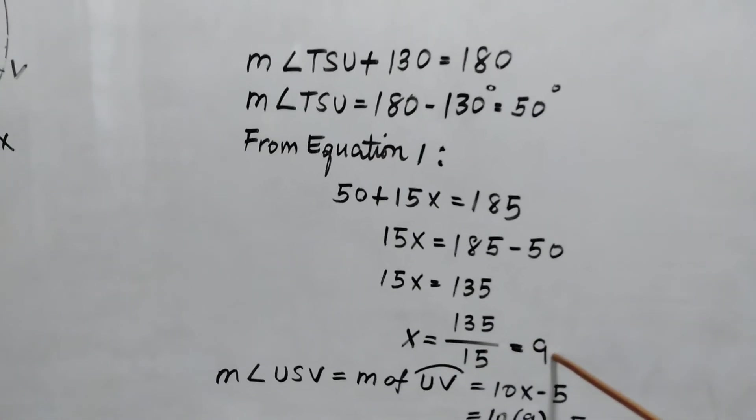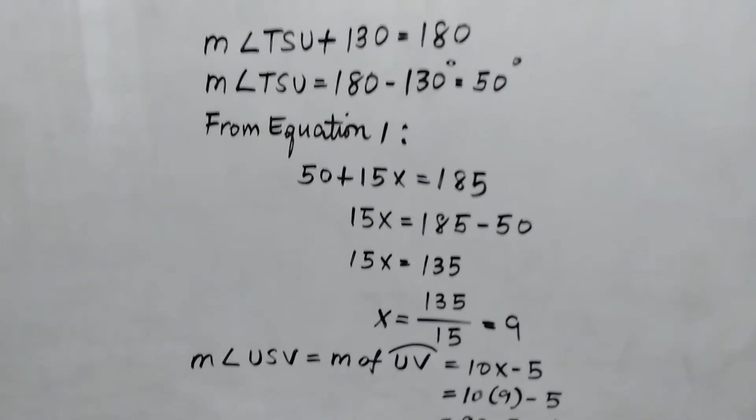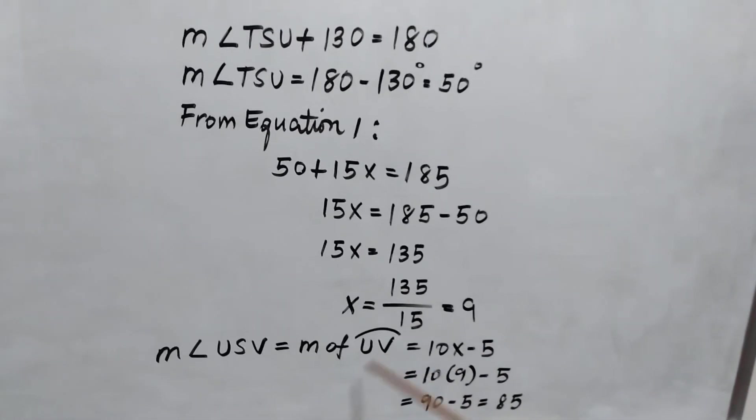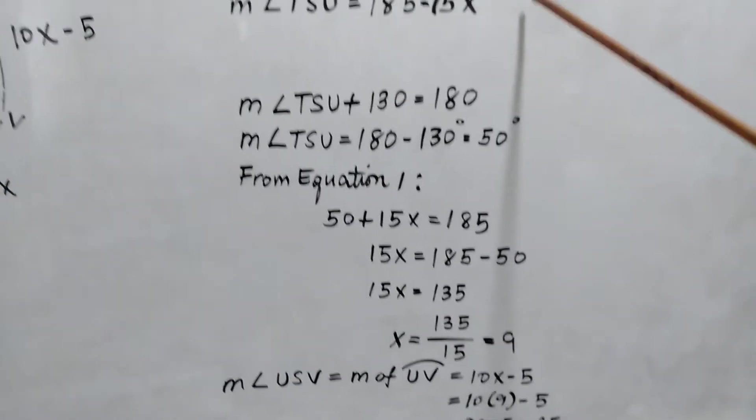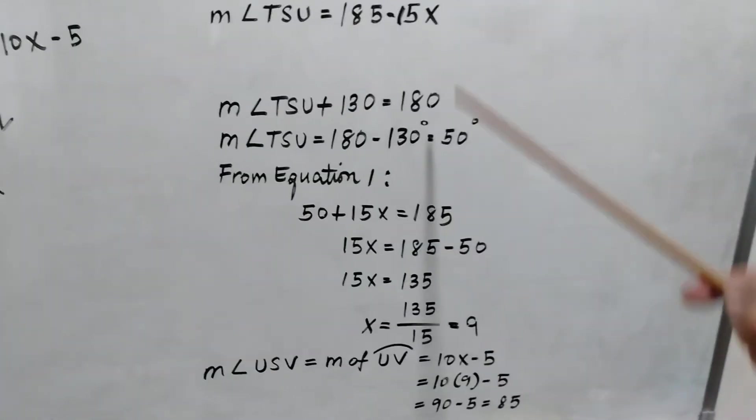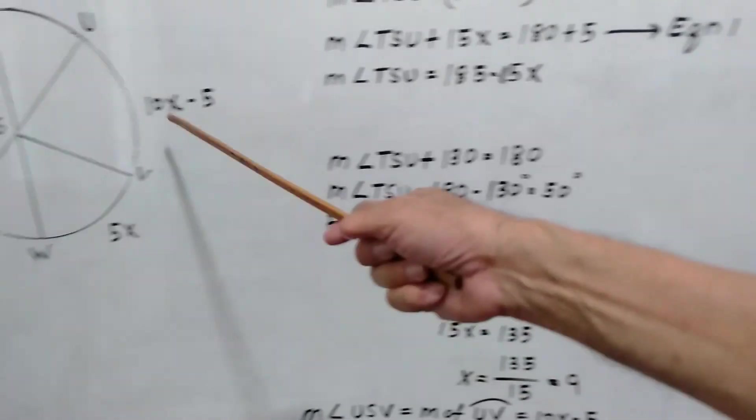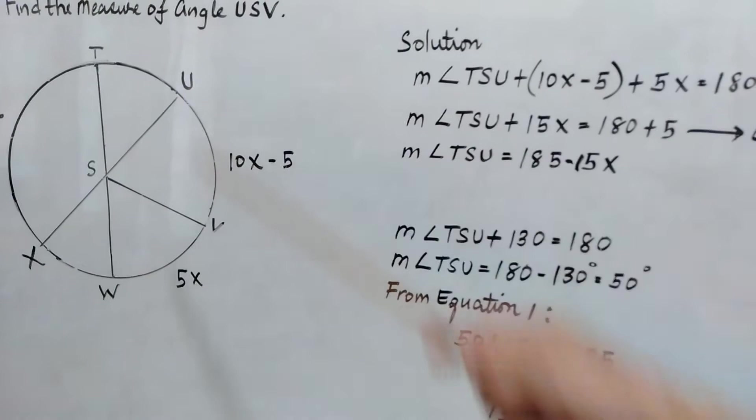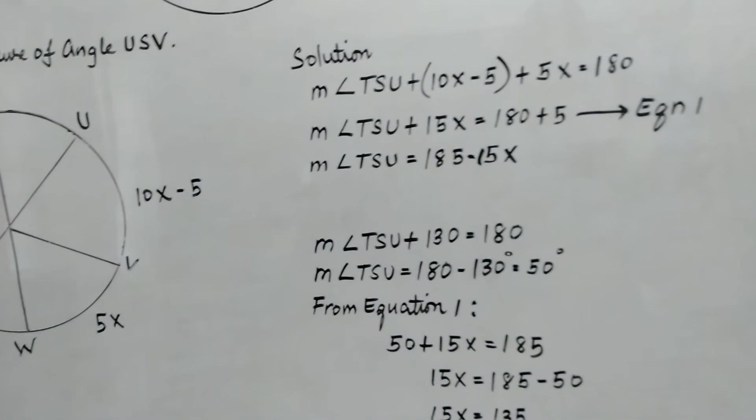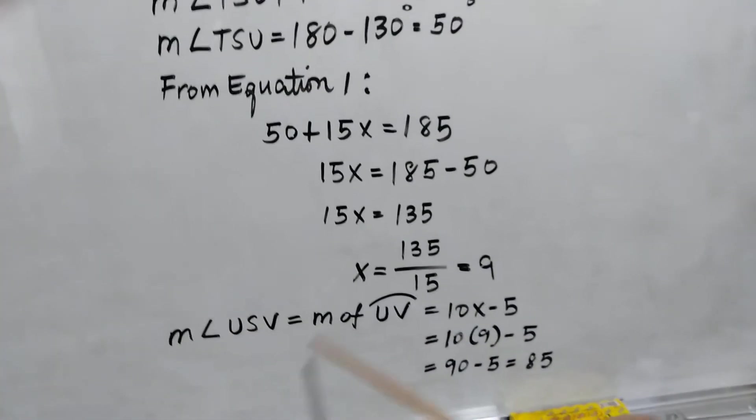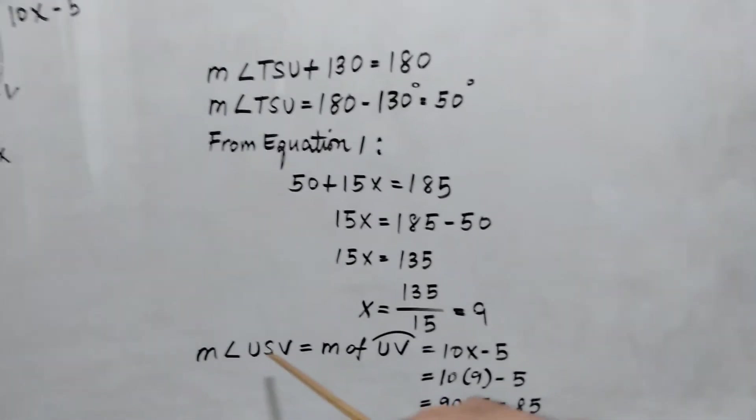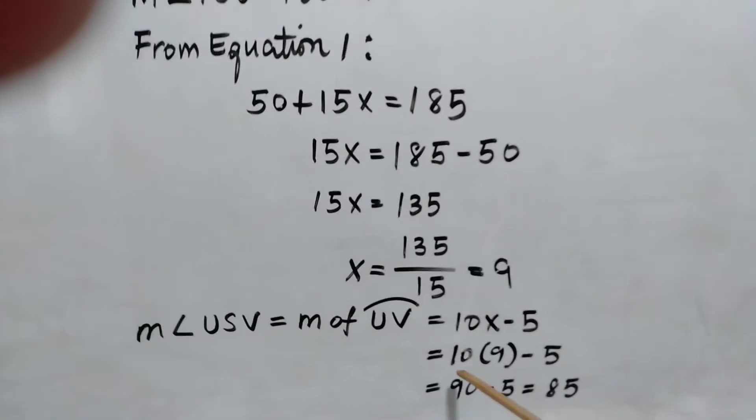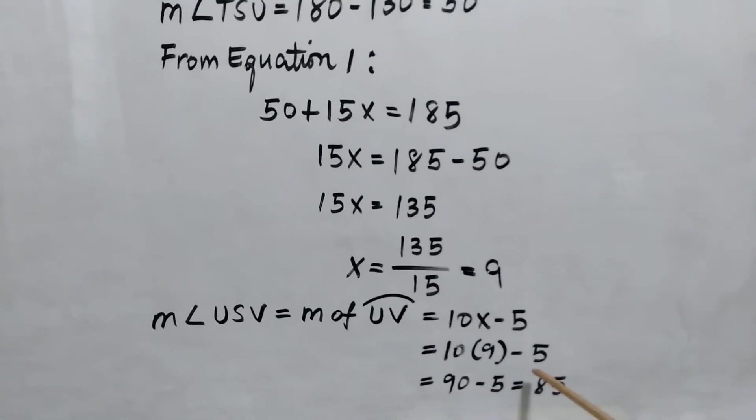After getting this value of X, we just substitute this value here to the equation of 10X minus 5. Because 10X minus 5 is equal to the central angle USV, which is the unknown. So the measure of angle UV is equal to measure of angle USV, the central angle is equal to 10X minus 5, we substitute 9 for X, so 10 times 9 is 90 minus 5 is equal to 85.